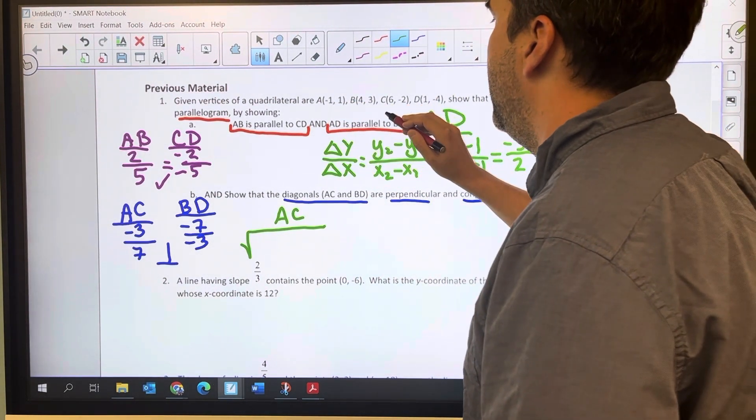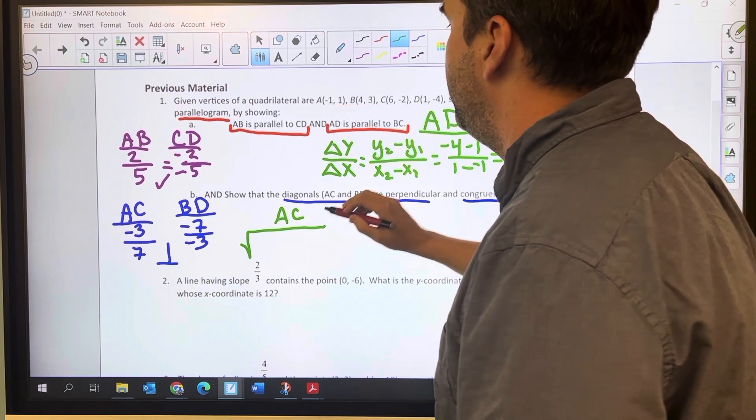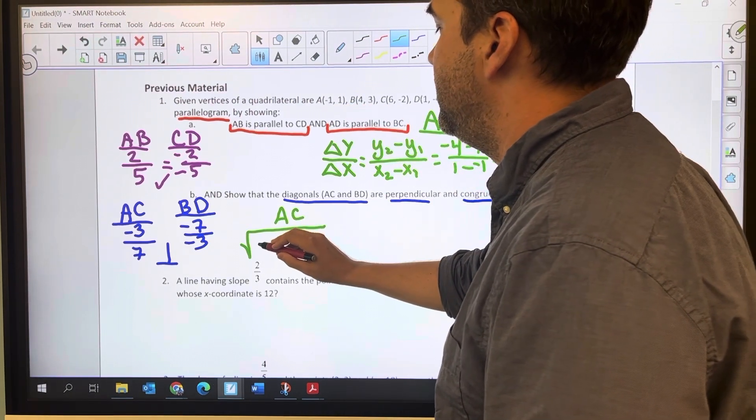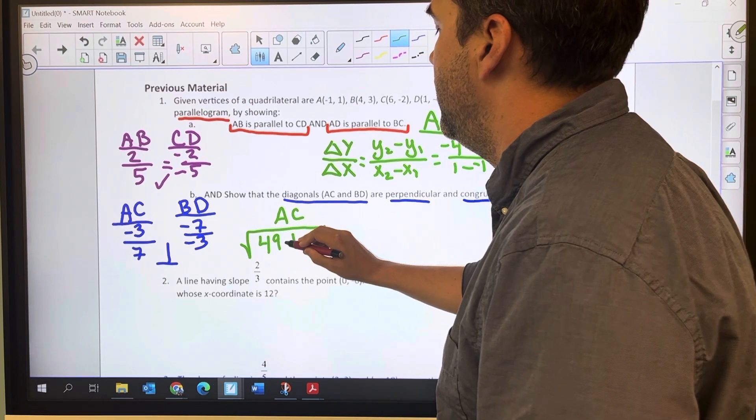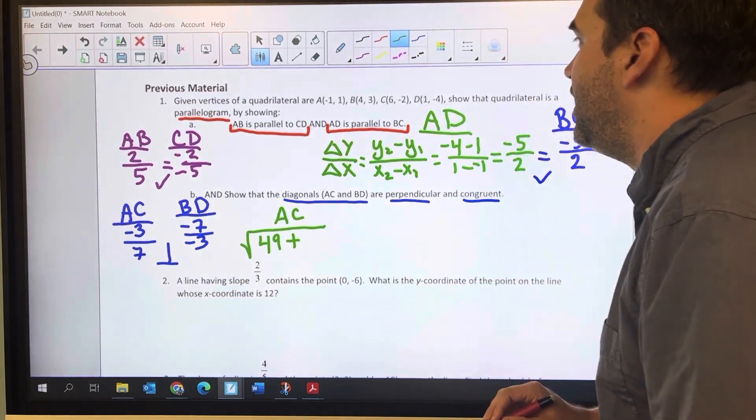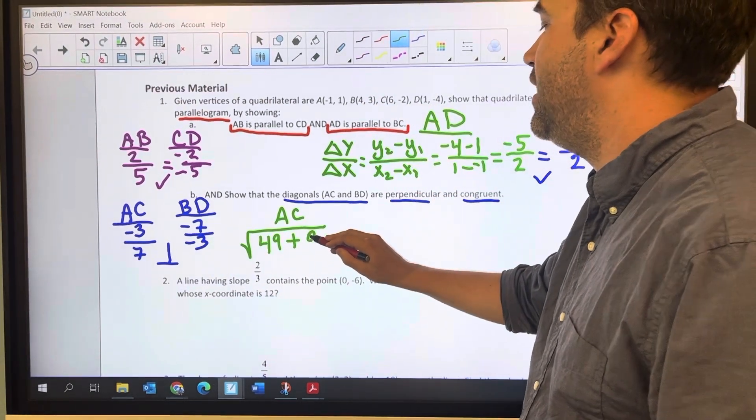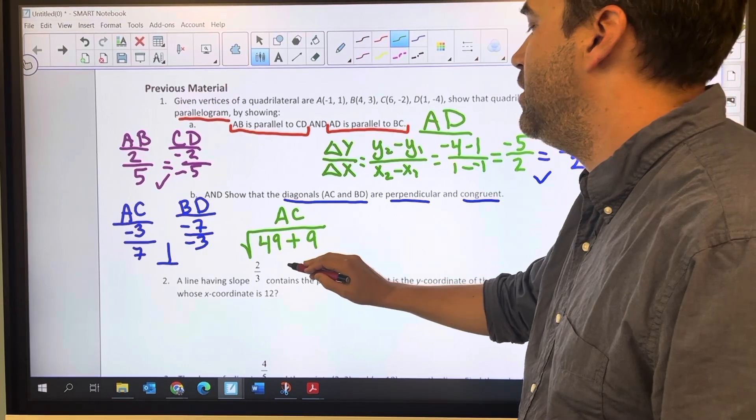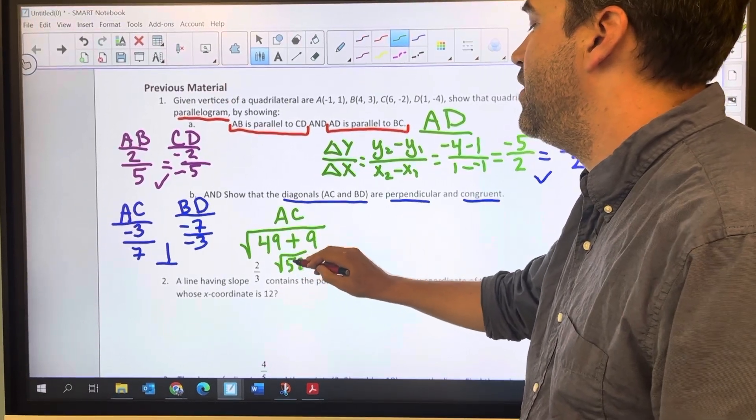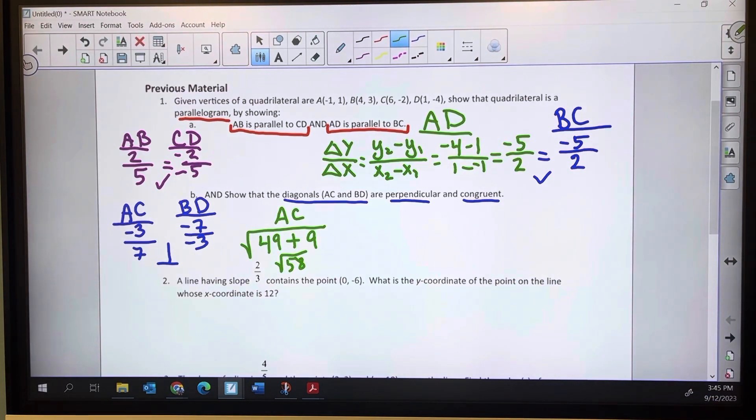So for AC, I've got negative 1 minus 6, which is negative 7. Negative 7 squared is 49. Plus, and then the y's goes from 1 to negative 2, that's 3, which is the square root of 9. So 49 plus 9, that's the square root of 58. When I look at that square root of 58, I'm not worried about simplifying it because that square root of 58 is not my answer. It's more work that I don't need to do right now.